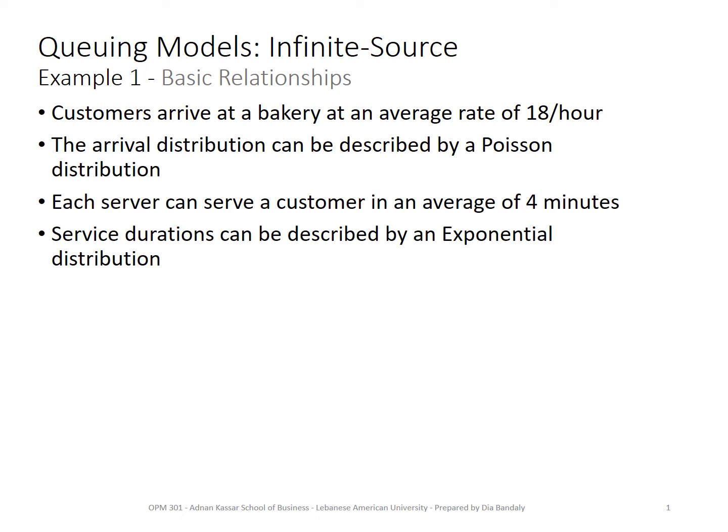We're going to do example number one, where customers arrive at a bakery at an average rate of 18 per hour. The arrival distribution follows a Poisson distribution. Each server can serve a customer in an average of four minutes, and service durations follow an exponential distribution.